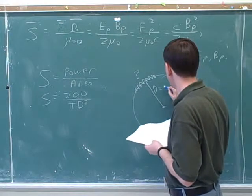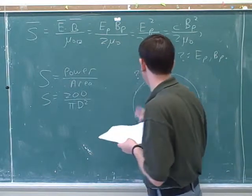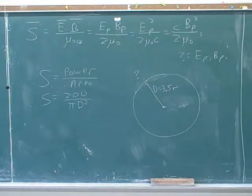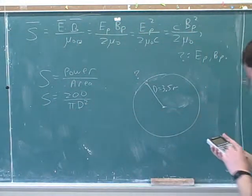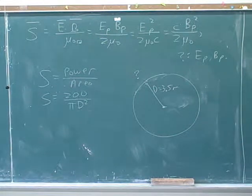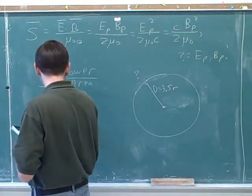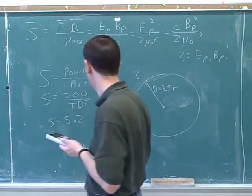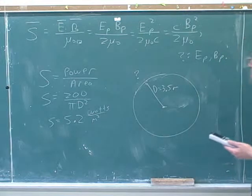You're absolutely right — you could just say d is 3.5 meters. But now we're not focusing on any particular area on that surface anymore. So we could call that 5.2. What would be the units on that? For power, it's watts over meter squared. This is an intensity, so it's 5.2 watts per meter squared.